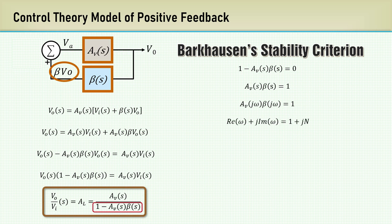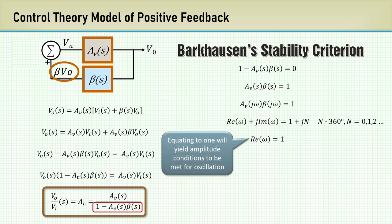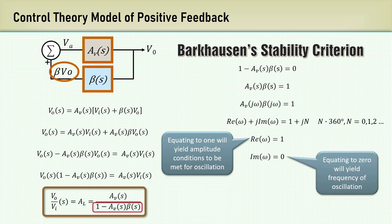Separating the real and imaginary terms, the real must be 1 and the imaginary needs to be 0, or an integer multiple of 360 degrees phase shift that results in the imaginary part being 0. Equating the network's real term to 1 will yield the amplitude conditions to be met for oscillation. Equating the network's imaginary term to 0 will yield the frequency of oscillation.